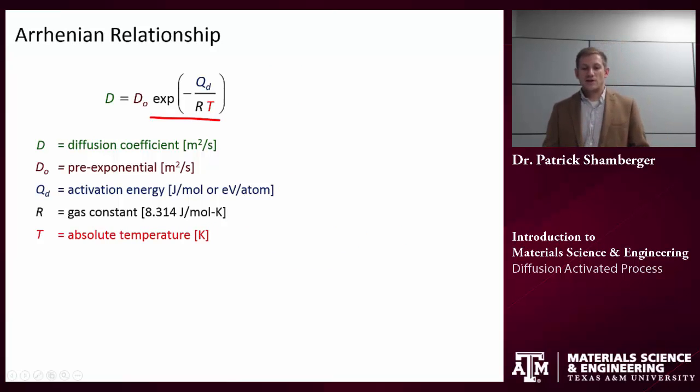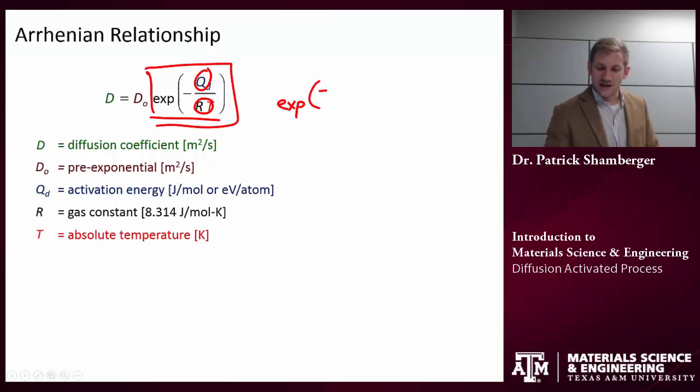It turns out that these are exponential relationships. This comes from the statistics of the system. If you look at the distribution of all the states that the system is likely to take, then there is some small number of states that has enough energy to overcome this activation energy. That number of states is given by this term: exponential of minus, in this case, we're going to use Q_d, the heat of diffusion over RT. We're using R instead of k, this is just a unit conversion.